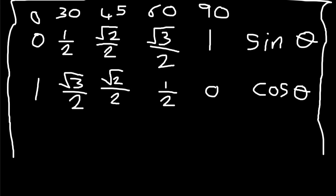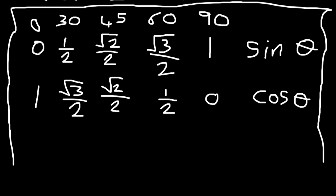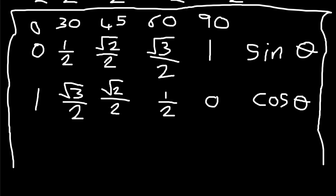Now we'll move on to tan theta. This is how you make up a simple table and master the trig ratios. If you can come up with this table immediately when you enter the exam room, you will not get any trigonometry questions wrong. Sometimes you might solve a question but get it wrong simply because you didn't know the value — for instance, writing zero instead of one for sine 90.